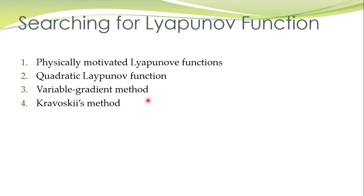Here are a few techniques and strategies which can be utilized for selection of a candidate Lyapunov function: we can use physically motivated Lyapunov functions, we can use a quadratic Lyapunov function, there is an approach called the variable gradient method, and another approach is Krowsky's method. Over the past years, I have observed that Krowsky's method is not very useful — its understanding is rather difficult and it is not applicable to many systems. So this year, we shall not talk about that approach. We shall study the remaining three approaches.